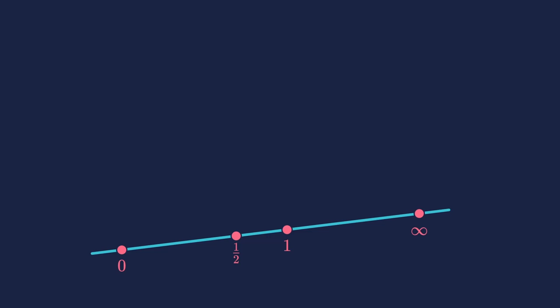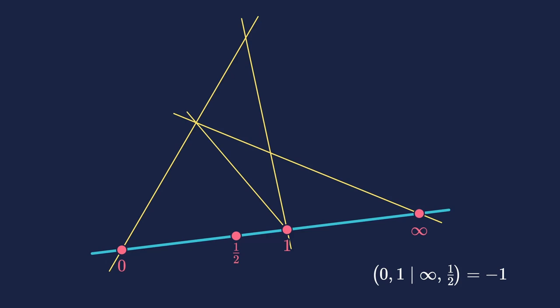Consider a line where we have the points zero, one, infinity, and one-half. Calculating the cross ratio gives us minus one. But we can also construct the point one-half explicitly as the projective middle point of zero and one. To do so, we imagine a square above the line and split it in half, as we have already seen a while ago.